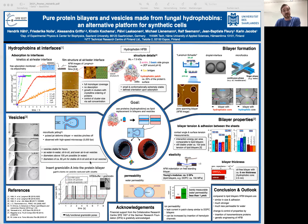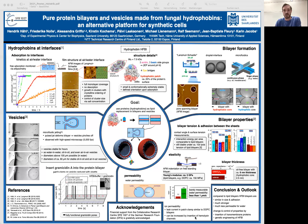On the route to artificial cells, a crucial question is whether these vesicles and bilayers can also be equipped with functional pores and channels. We first tried this with the simple gramicidin channel — and you can see it is fully functional. With the much larger hemolysin pore, we observed a massive increase in the ion permeability of these bilayers.